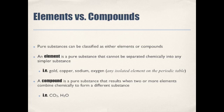Pure substances can be classified as either elements or compounds. An element is a pure substance that cannot be separated chemically into any simpler substance. Think about all the elements on the periodic table — that is the smallest pure substance. Examples include gold, copper, sodium, and oxygen. Any isolated element on the periodic table is considered an element — hence the name, periodic table of elements.